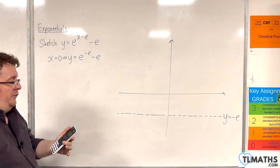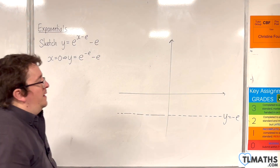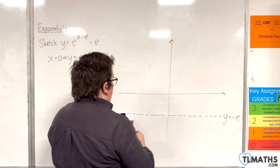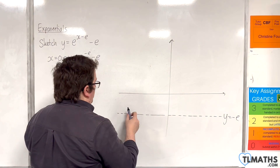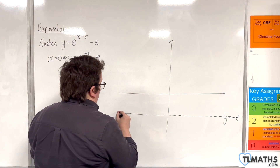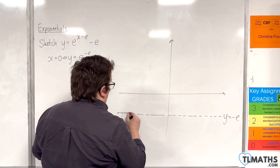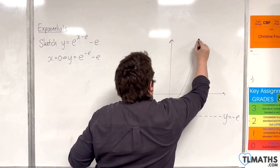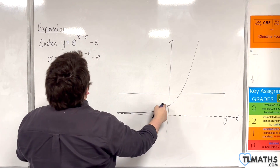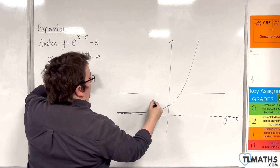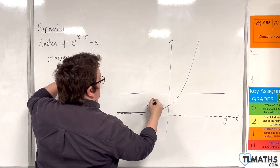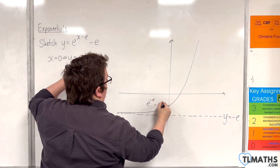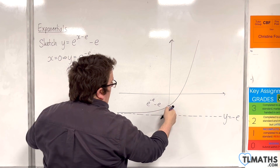Now, e to the minus e take away e is approximately minus 2.65. So that means our graph crosses down here. Our curve looks something like this — this point is precisely e to the minus e, take away e.